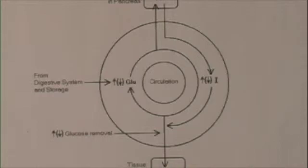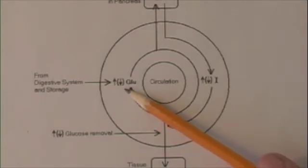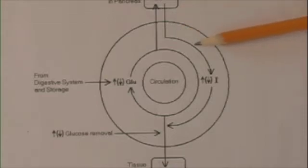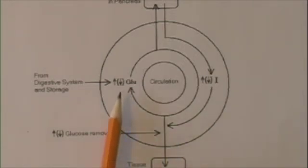One of the major regulations of glucose levels is the hormone insulin secreted by a group of cells in the pancreas called the beta cells. Now, as blood glucose levels increase, this is sensed by these beta cells, leading to an increase in the secretion of insulin into the blood. Now, the increased secretion of insulin causes a rise in the removal of glucose from the blood, the end result being a decrease in glucose levels back to where they should be.